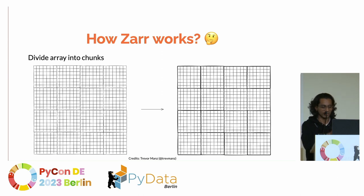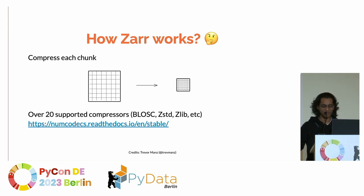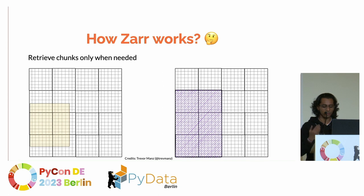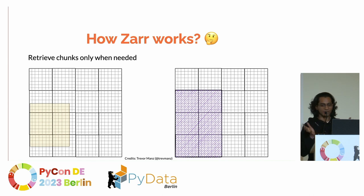What ZAR does is divide your array into equal chunks. It compresses all of these individual chunks using compressors in the NumCodex library — NumCodex is a dependency of ZAR. It supports BLOSC, ZSTD, ZLIB, LZMN, and all the compressors you can think of. These compressed chunks are stored on your hard disk, not in main memory. You can retrieve the chunks you want to work with into main memory, make operations, and store them back. The reads and writes are concurrent — you can work on multiple chunks at the same time.